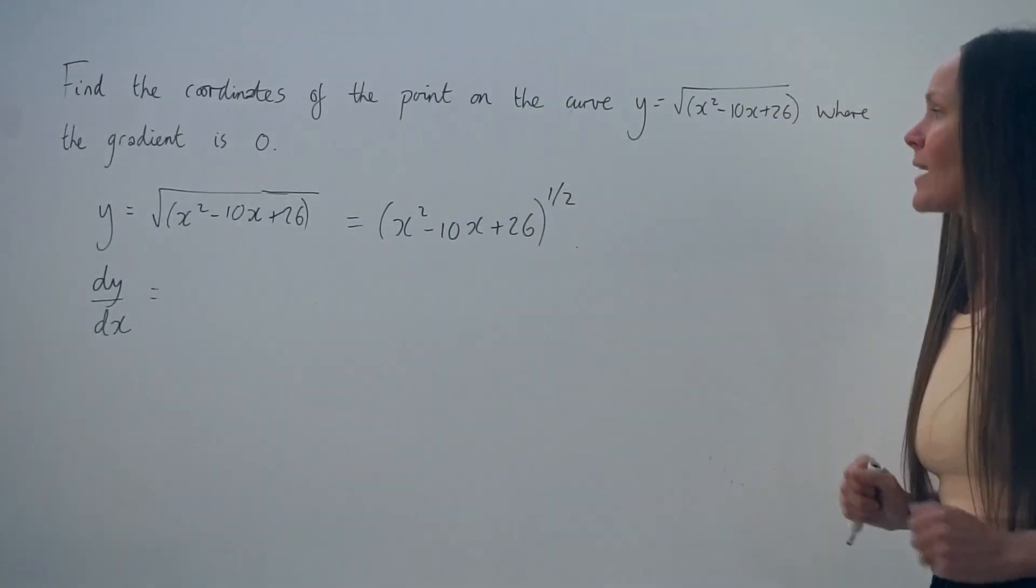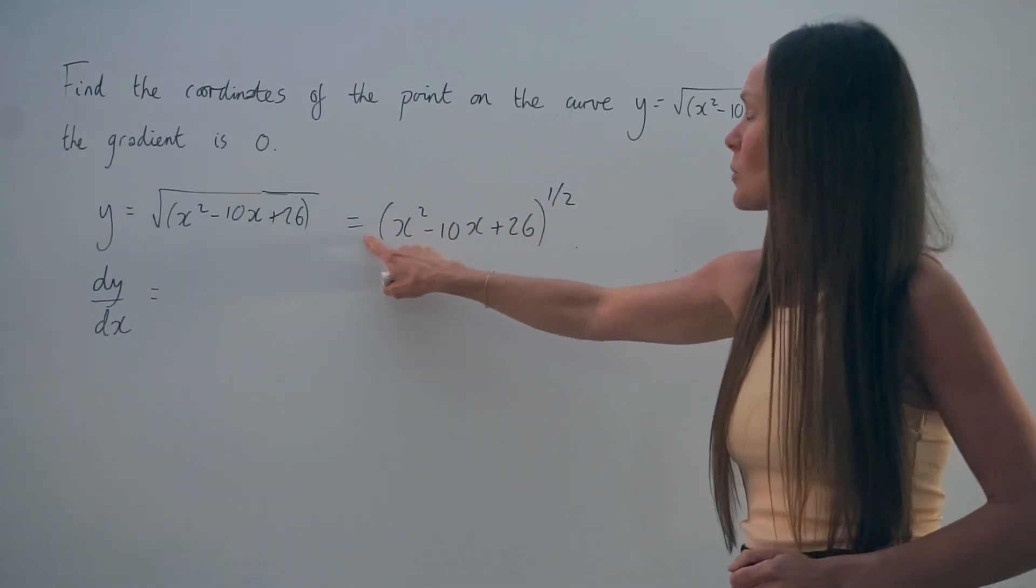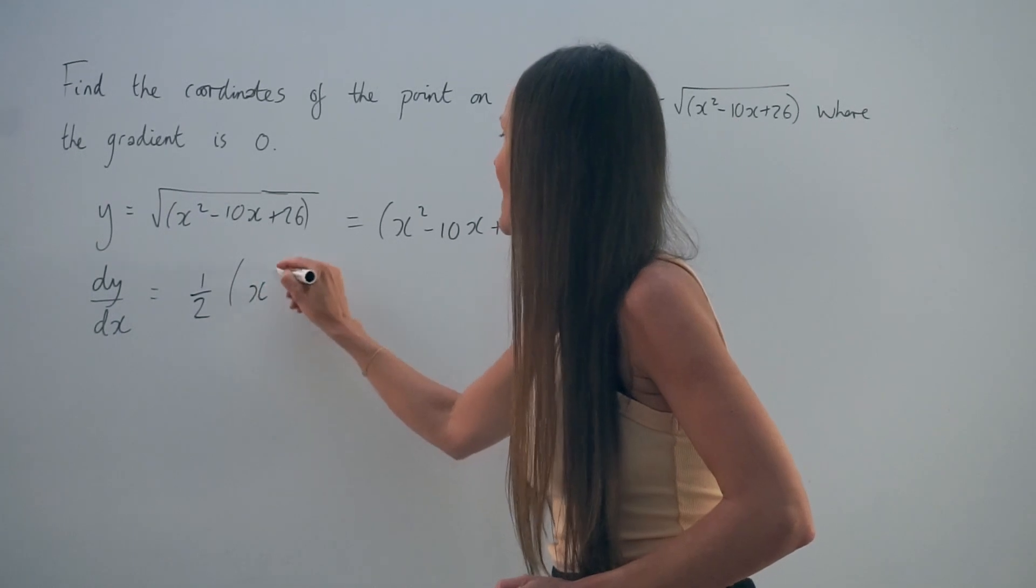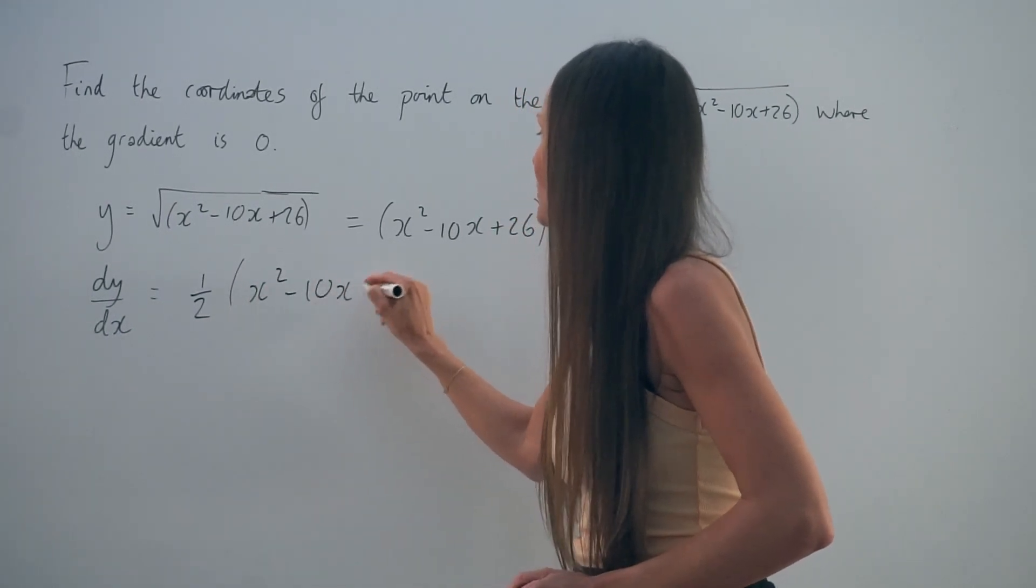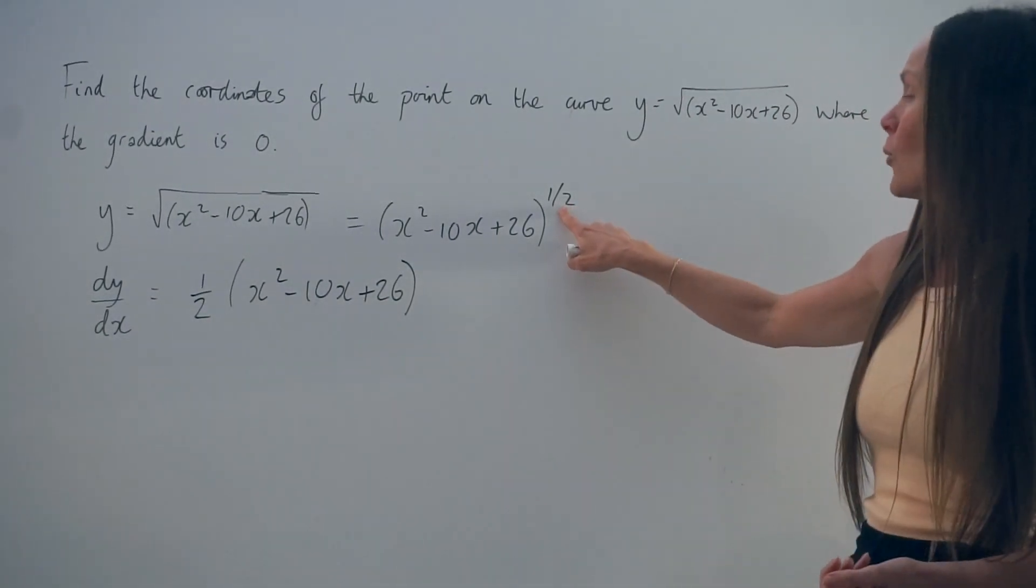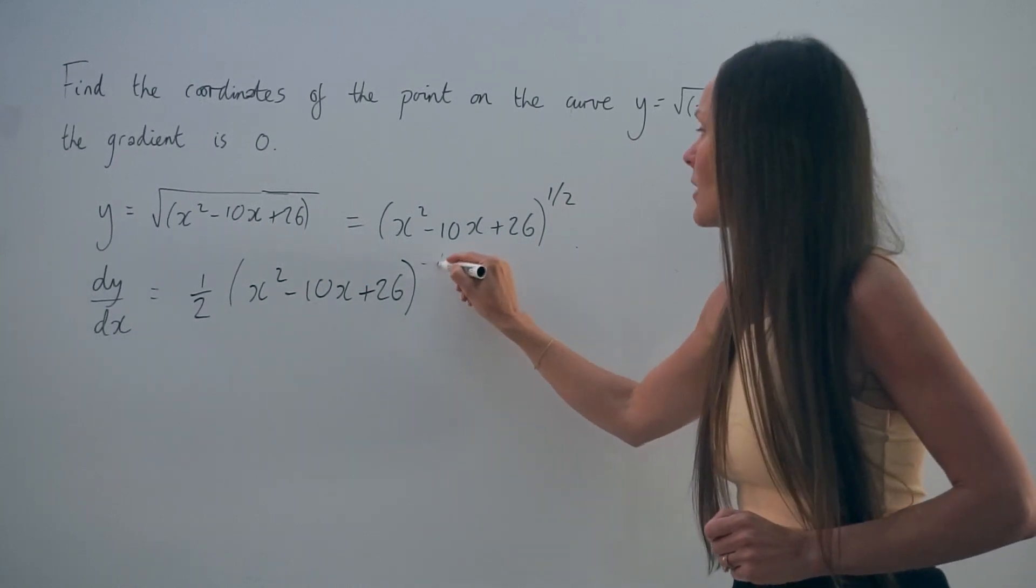So if I differentiate on the outside to start with, I take this power, a half, and I multiply it by this bracket. So a half multiplied by x squared minus 10x plus 26. So what's inside the brackets stays the same. The power always decreases by one. So a half take away one is negative a half.